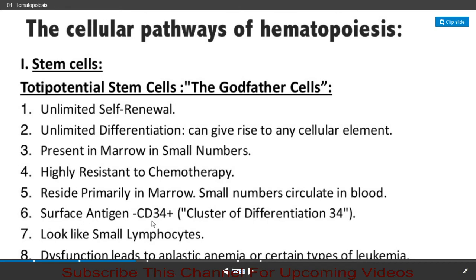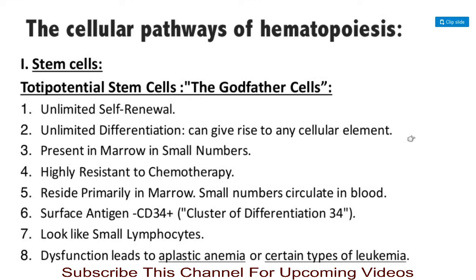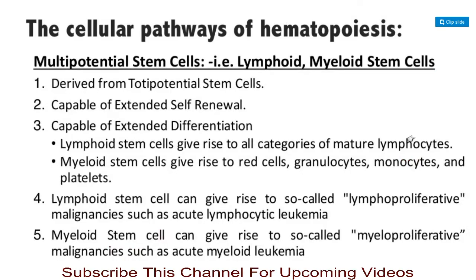Totipotent stem cells have the surface antigen CD34+, where CD stands for cluster of differentiation. Morphologically they look like small lymphocytes. Dysfunction of these totipotent stem cells can lead to aplastic anemia or certain types of leukemia.